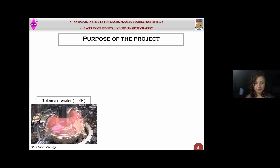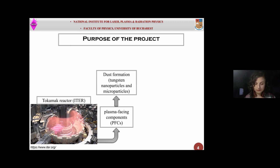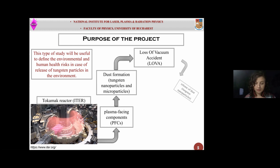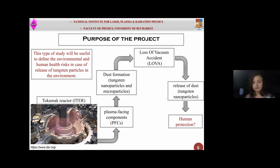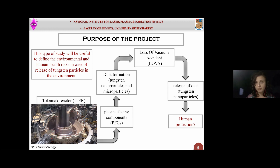I will continue with the purpose of my work. In the tokamak reactor, some tungsten components can interact with plasma — for example, the divertor. After this interaction, this component can form dust, which represents a mixture of nano and microparticles. Besides changing plasma properties, these nanoparticles can be released into the environment in case of a nuclear accident. So the question is: can these tungsten nanoparticles pose a health risk for people? This is the reason why I intend to study tungsten nanoparticle toxicity.